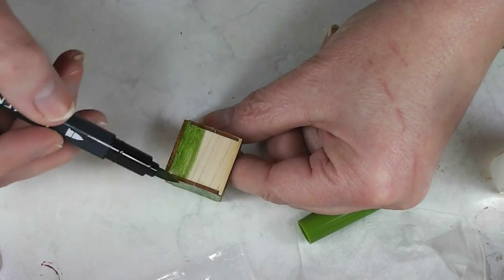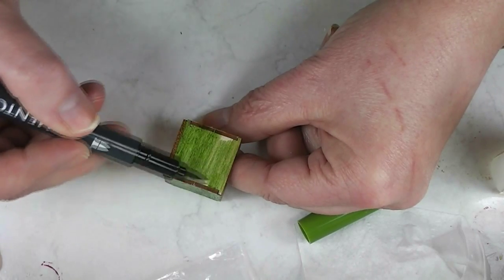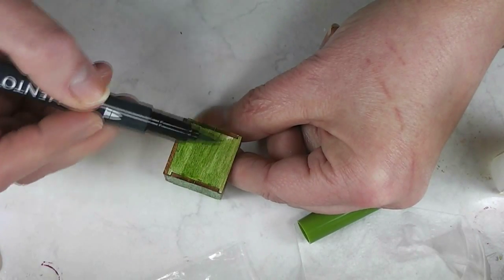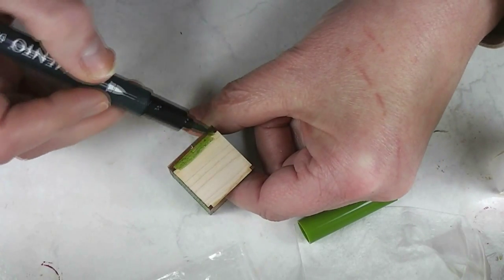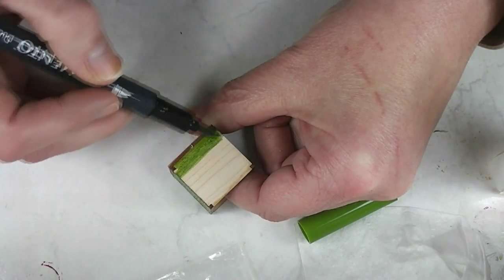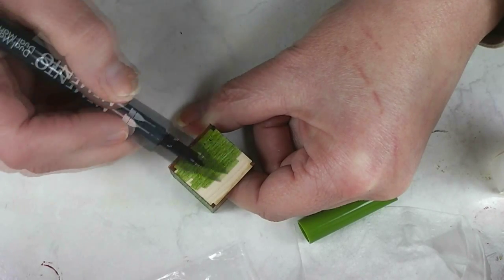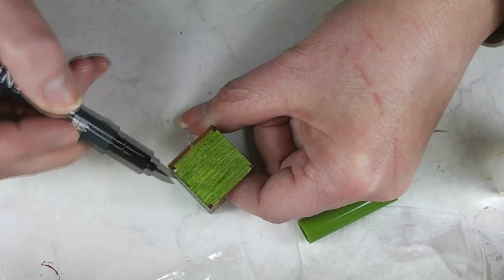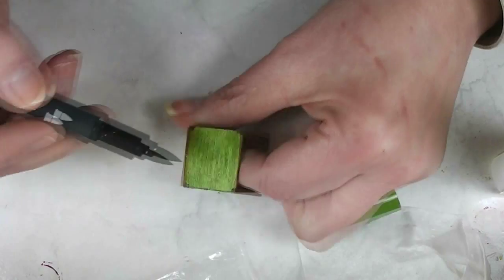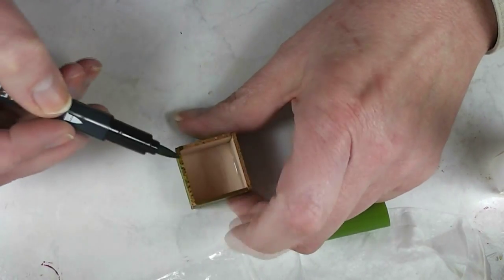I would assume that any water-based marker would work, probably even the Crayola Kids markers you can buy at practically any store. Try it out on a scrap of wood. I actually tried several different colors on the extra piece of wood from the kit to choose what color I wanted to do.